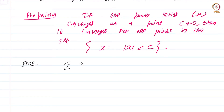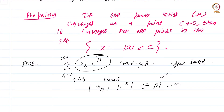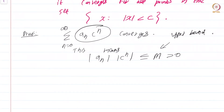Proof: We have that summation aₙ cⁿ, n from 0 to infinity, converges. This means that |aₙ| |c|ⁿ is less than or equal to some capital M greater than 0, an upper bound. Since the series converges, the sequence aₙ cⁿ converges to 0 and therefore must be bounded. So we can find an upper bound M such that |aₙ cⁿ| ≤ M for all n in ℕ ∪ {0}.